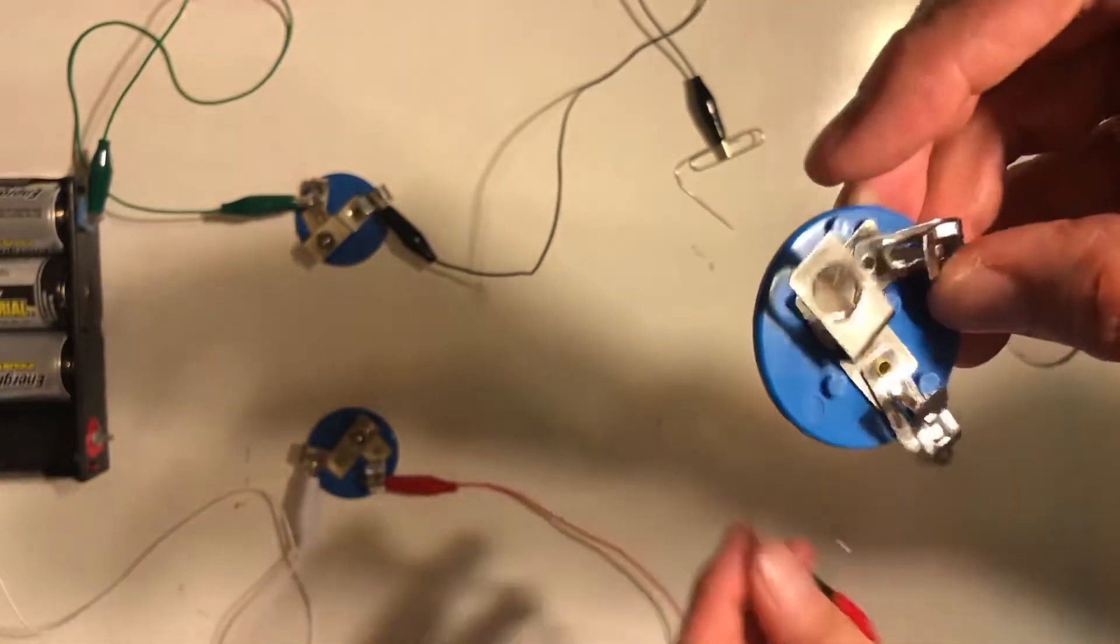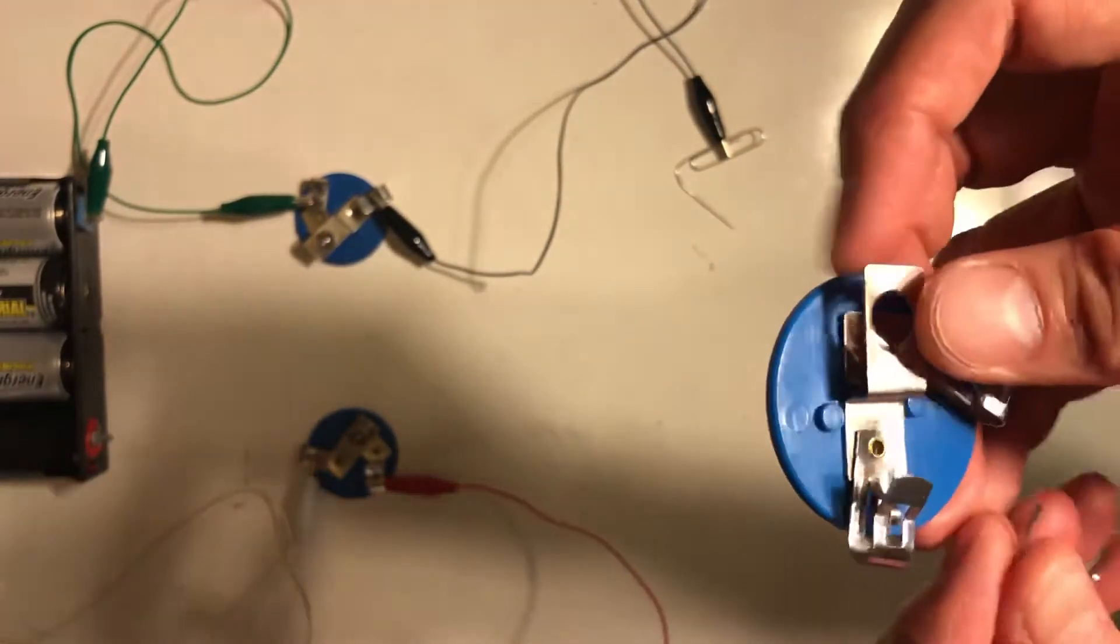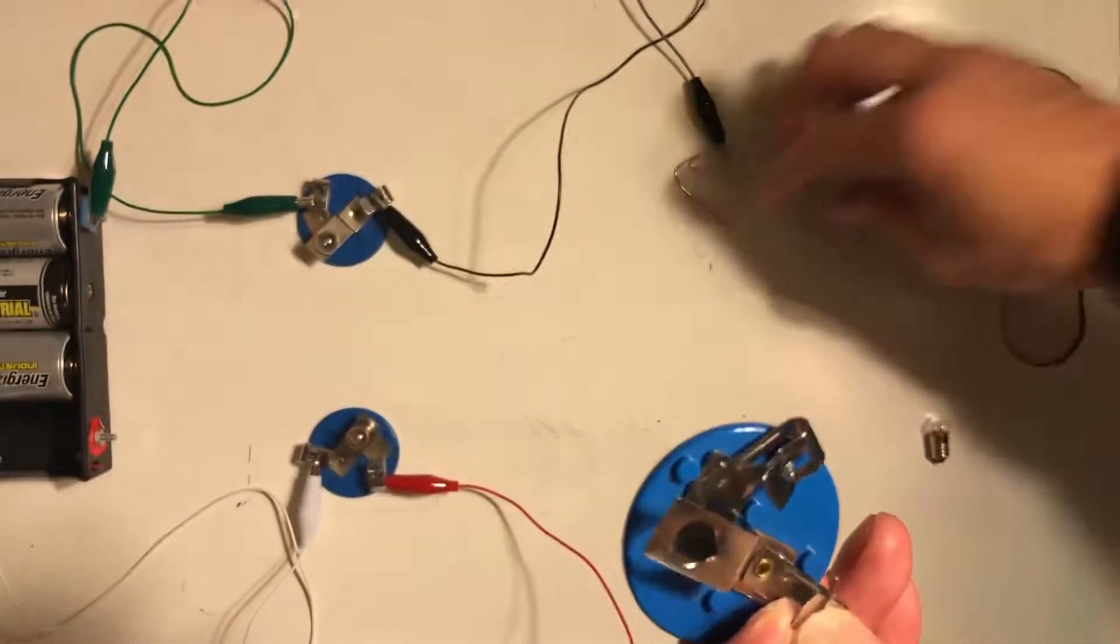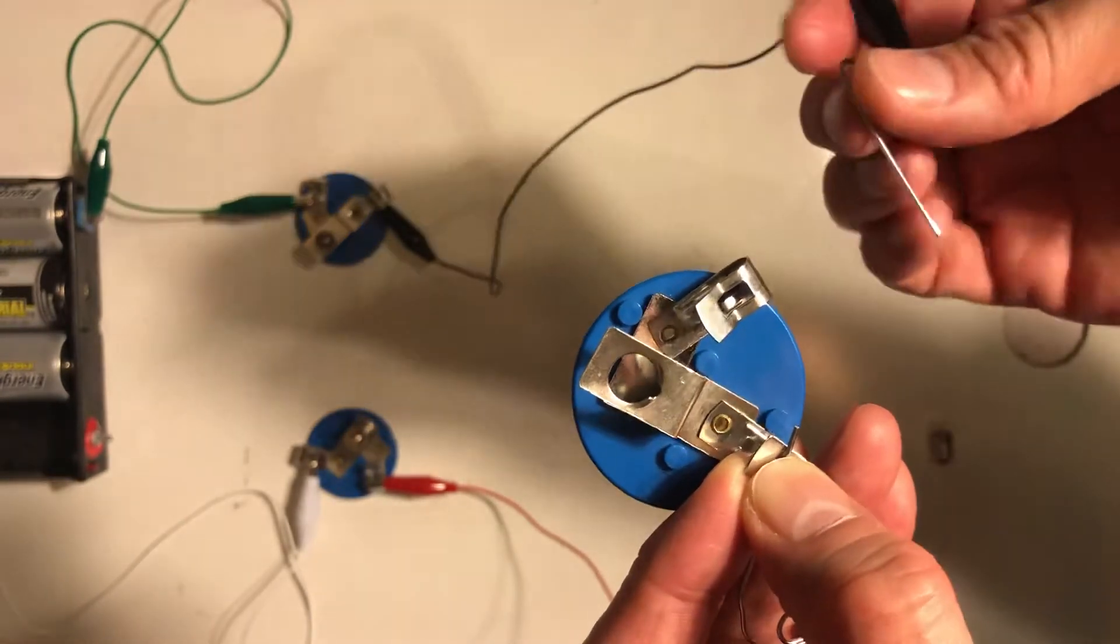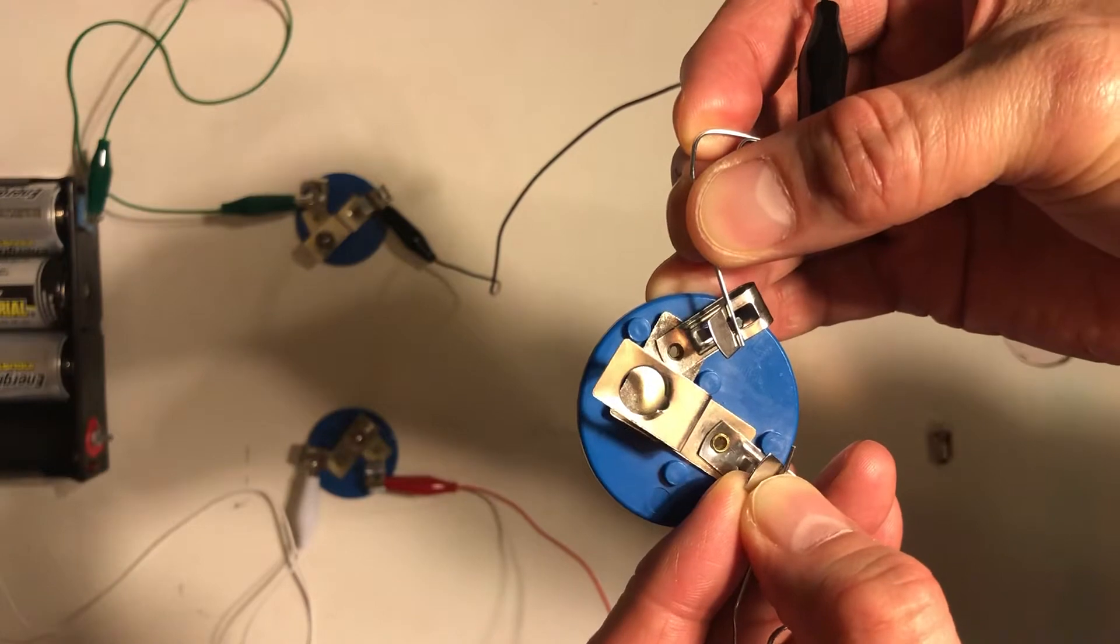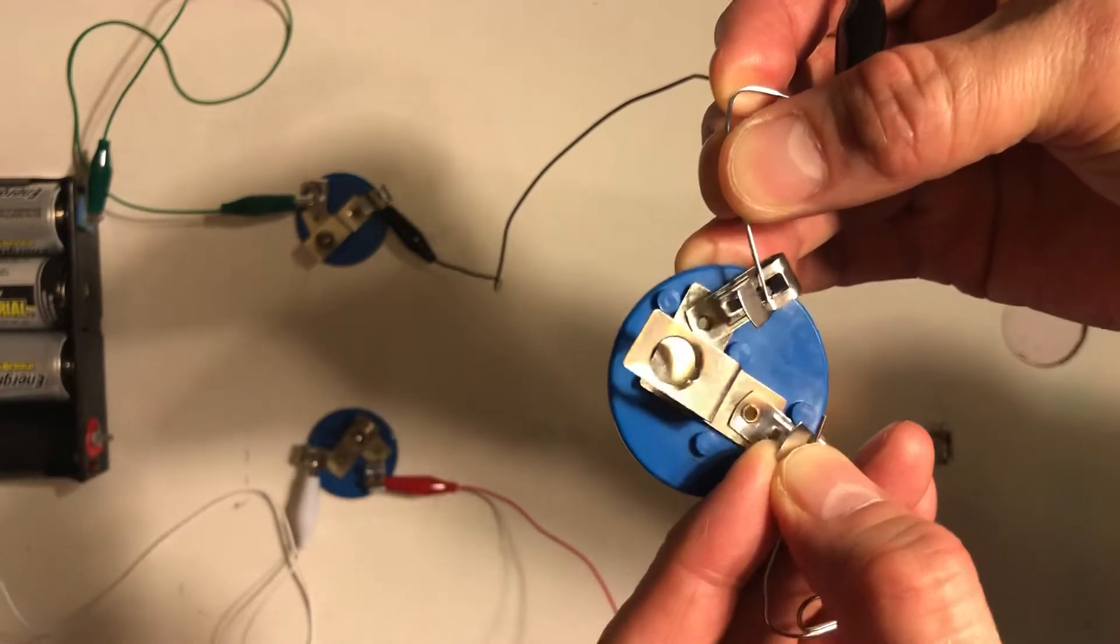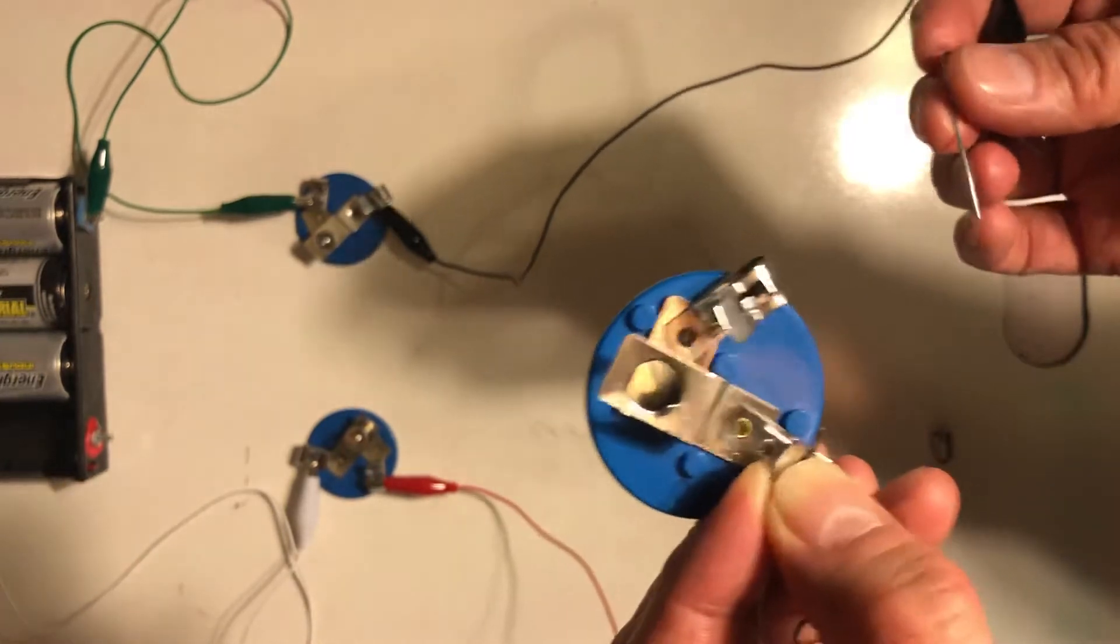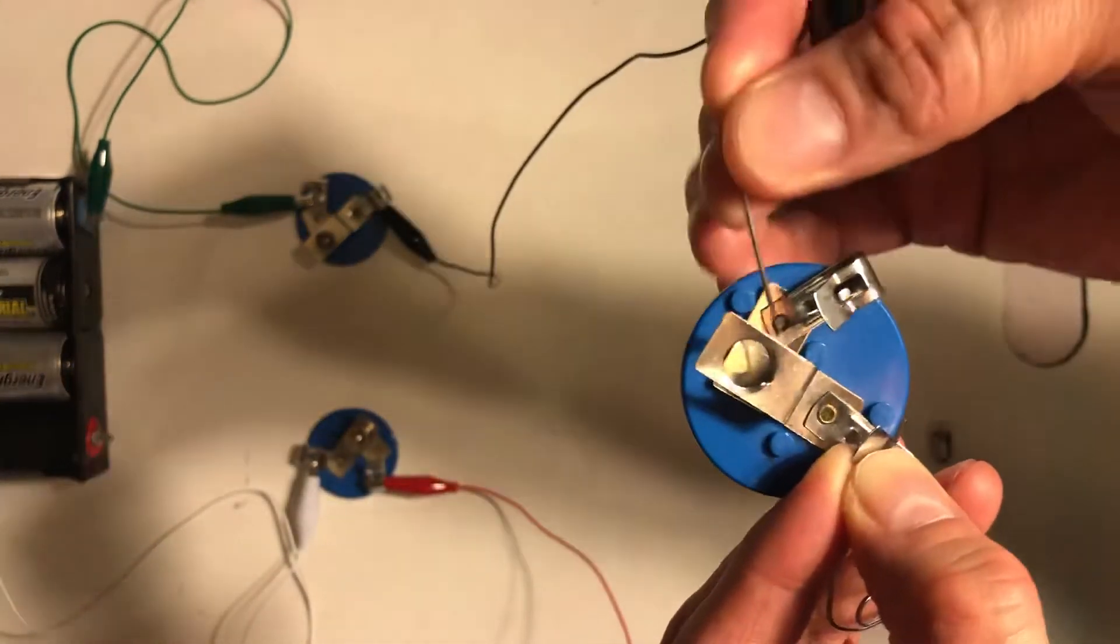The first thing it tells you to do is to touch clip A and clip B. That's just the clip here and clip here. Hopefully you can see that those lights aren't lighting. Then it says touch clip A and plate A, so here's clip A right here and plate A is going to be right here.